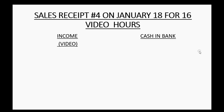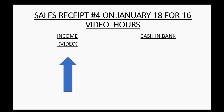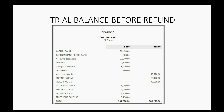For example, back on January 18th, we made a sale receipt for Betty for 16 video hours. When we did that, video income went up. And because she paid us directly to the bank account, cash and bank also went up by the same amount. The trial balance you see includes the result of that sale receipt, and these are the numbers we have before we record our first refund receipt.